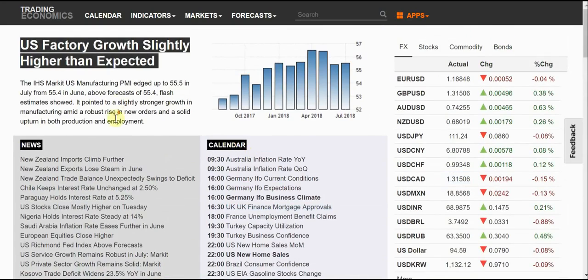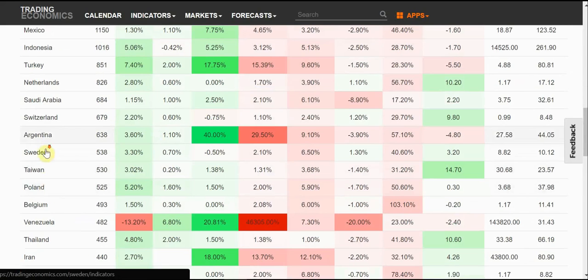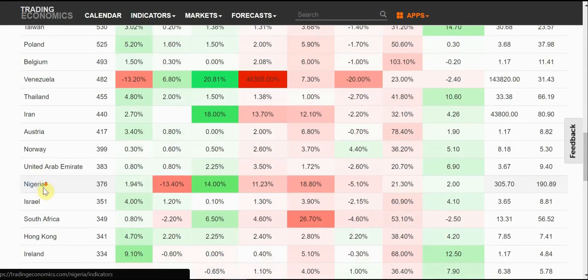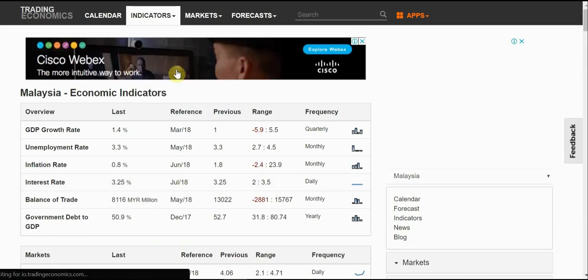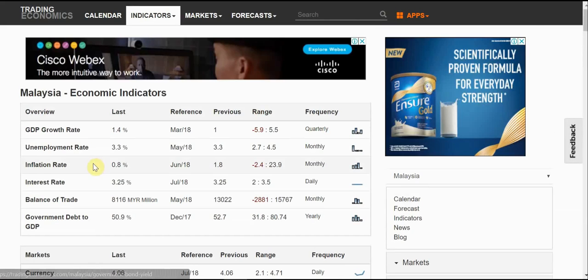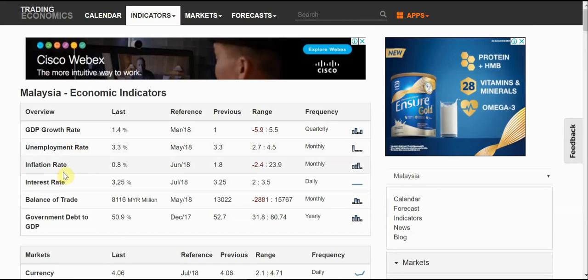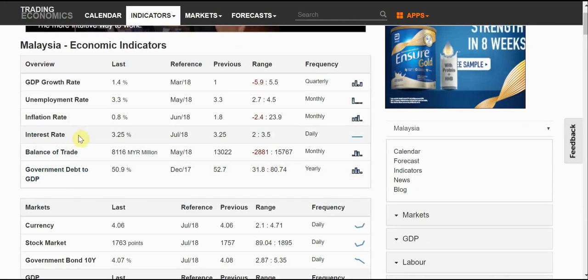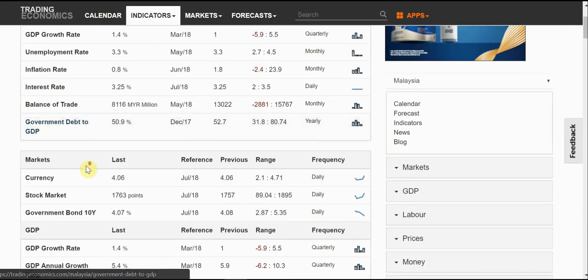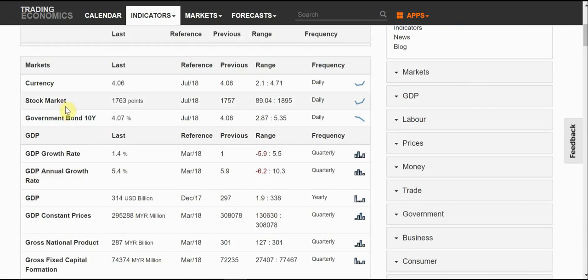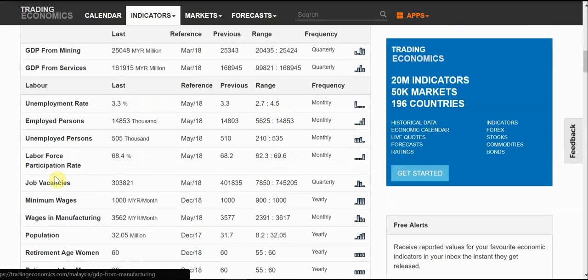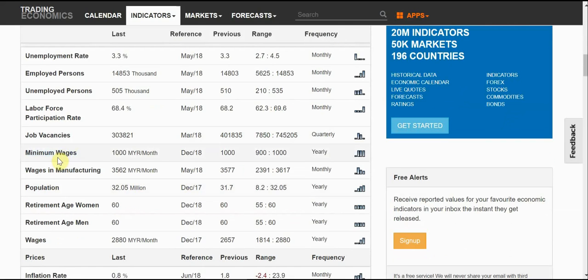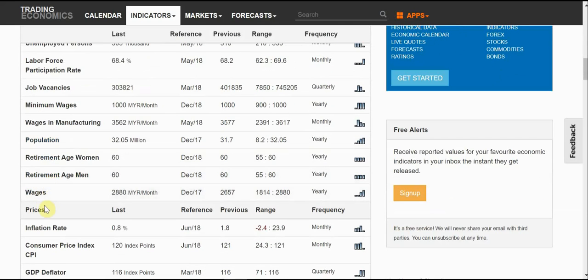Then let's take a look at Malaysia, because we usually look for Malaysia for our economic data. You can see that we have a lot more data here. Besides the GDP, unemployment, inflation, interest rate and all this, the normal economic data, we also have the stock market figures, the government bond. Then we have our job vacancies, minimum wage, our retirement age, our prices.